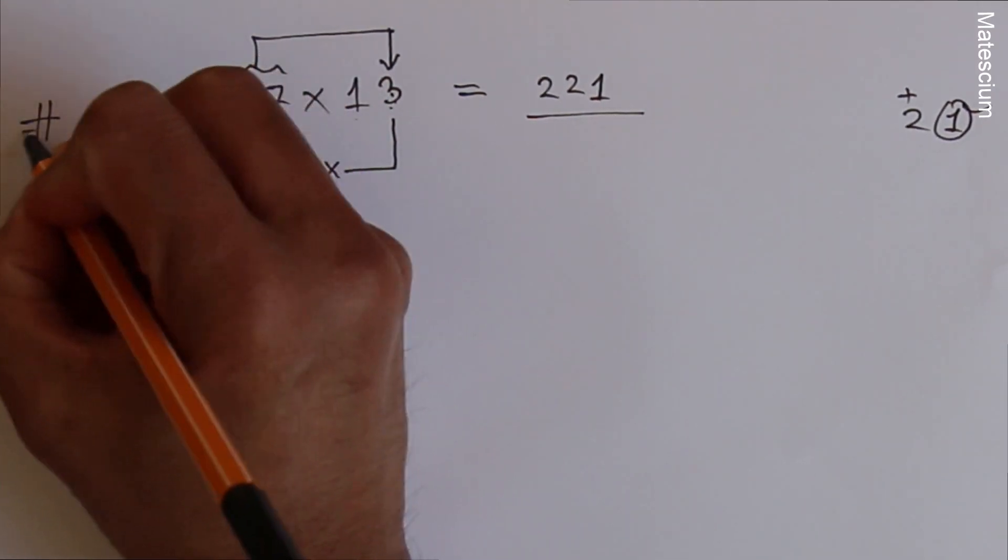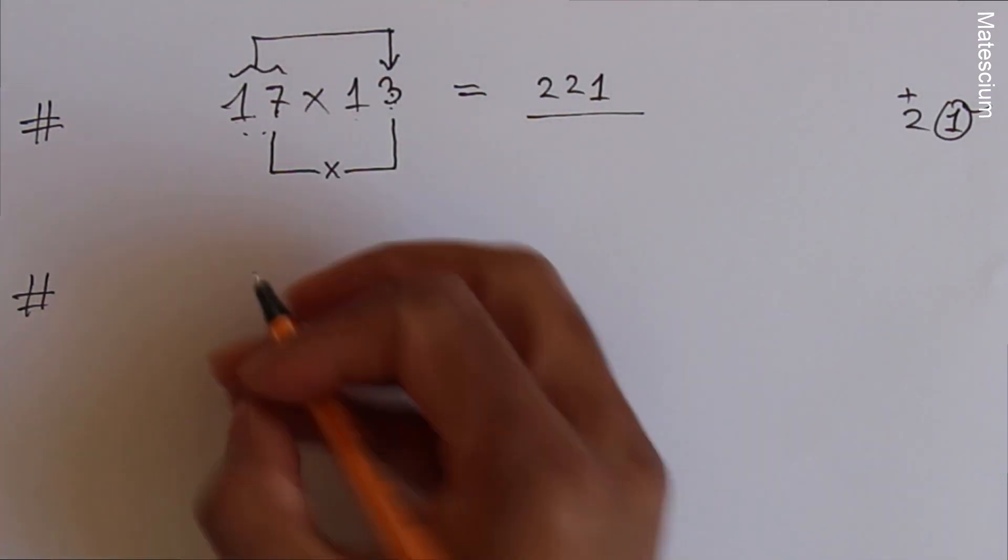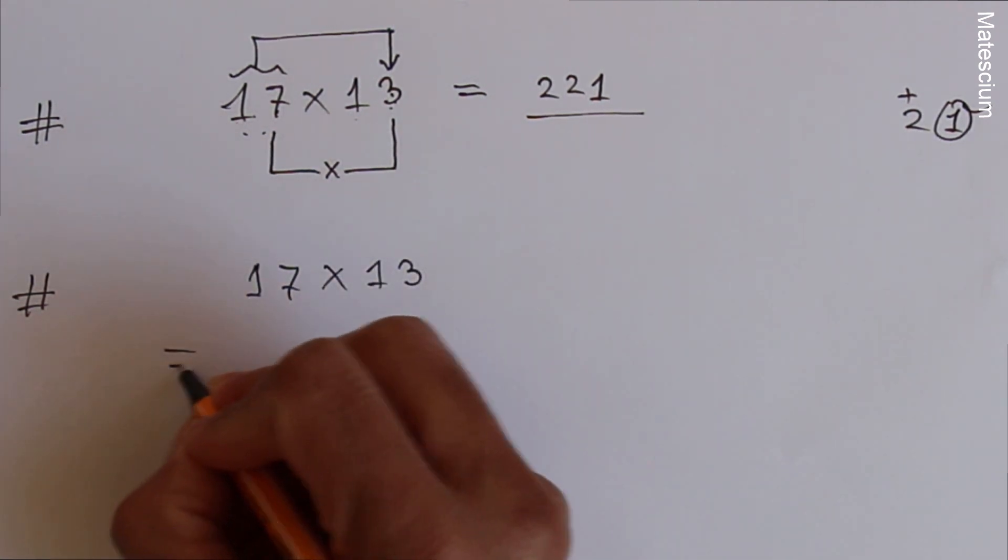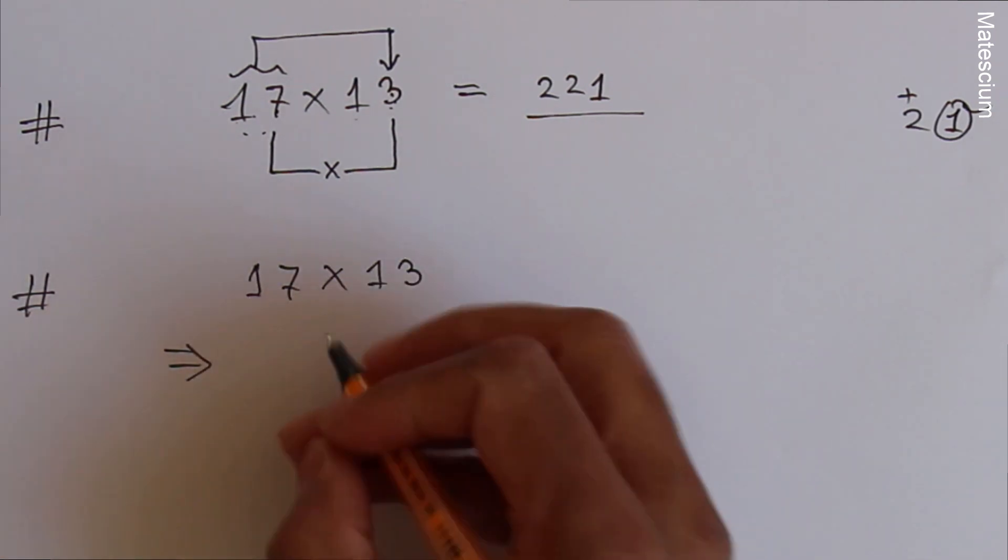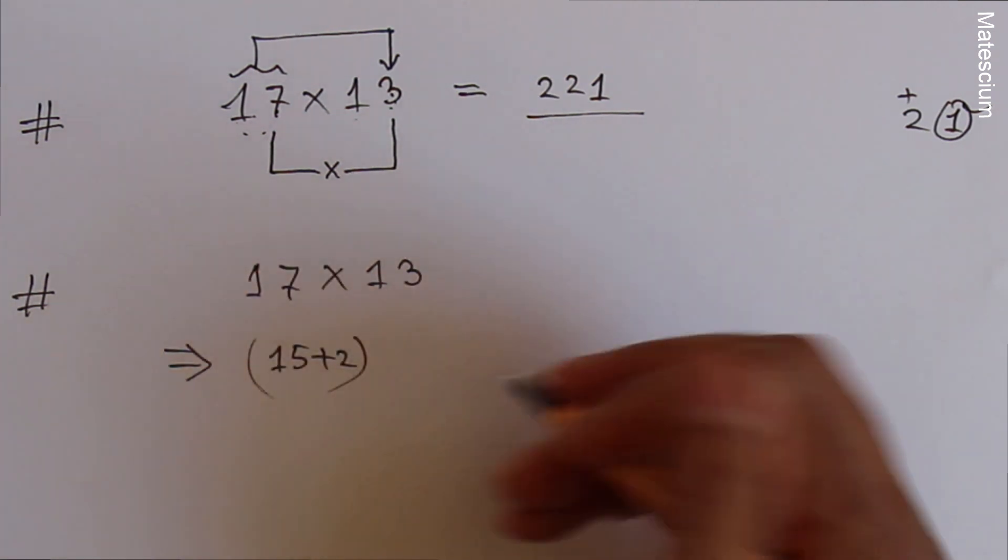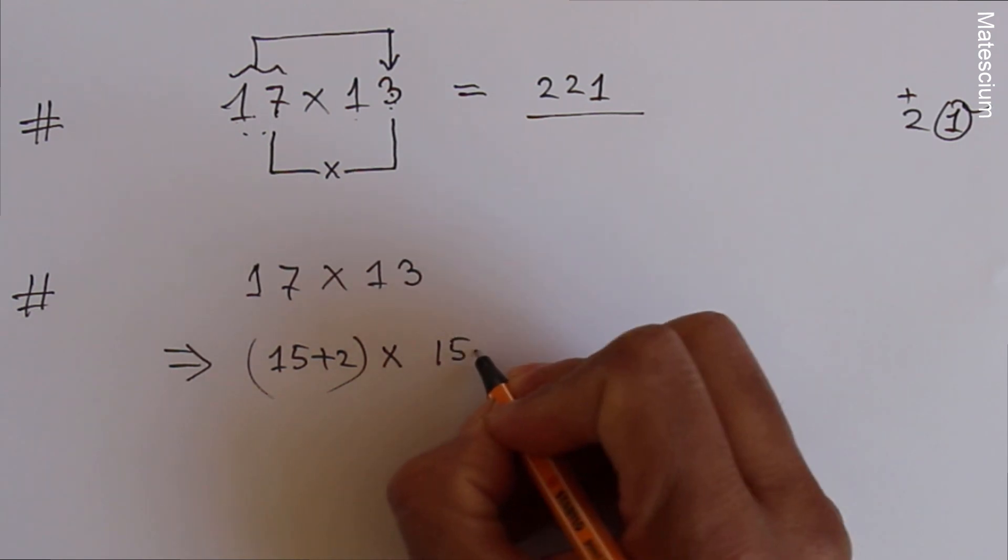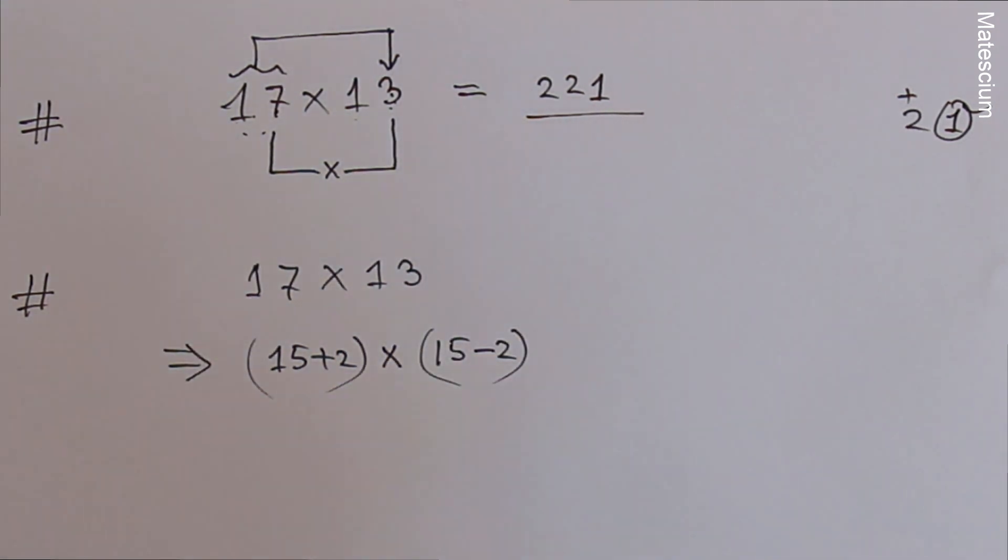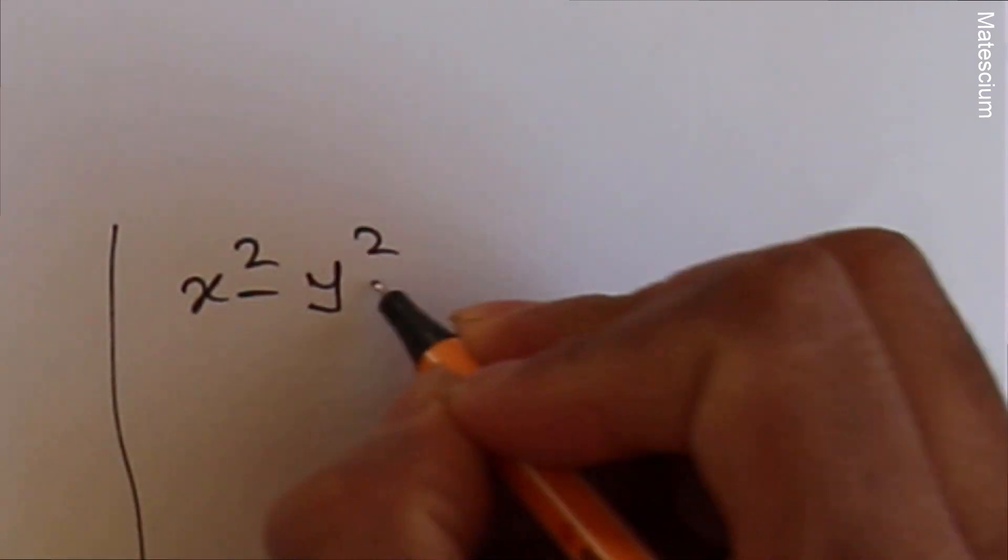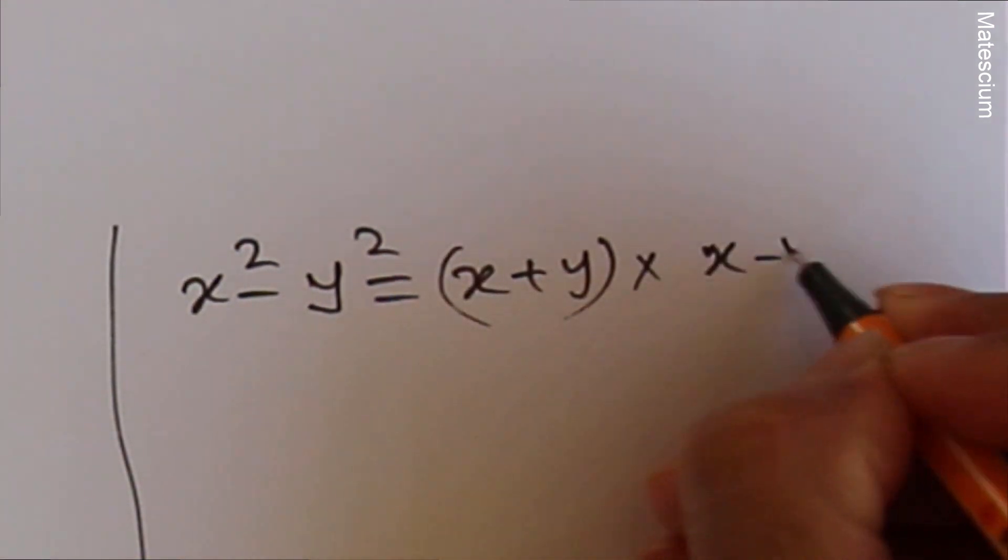This is method number 1 and I can multiply the same thing by a different method. 17 times 13. So I can rewrite 17 as 15 plus 2. That means 15 plus 2 is 17, multiplication sign, 13 is 15 minus 2. We know a very famous formula from our childhood: x² minus y² which equals (x plus y) times (x minus y).